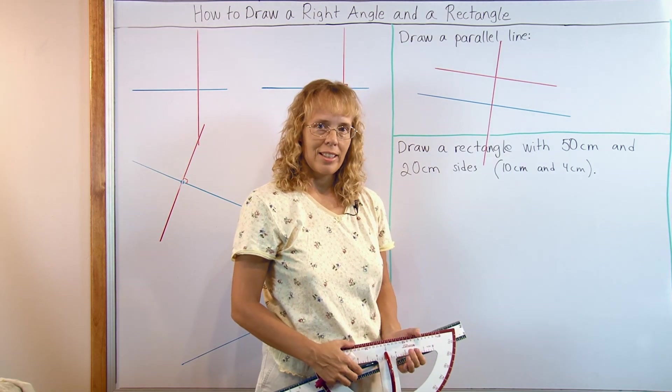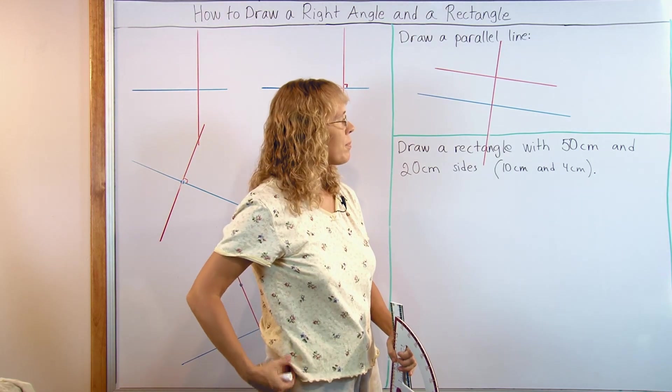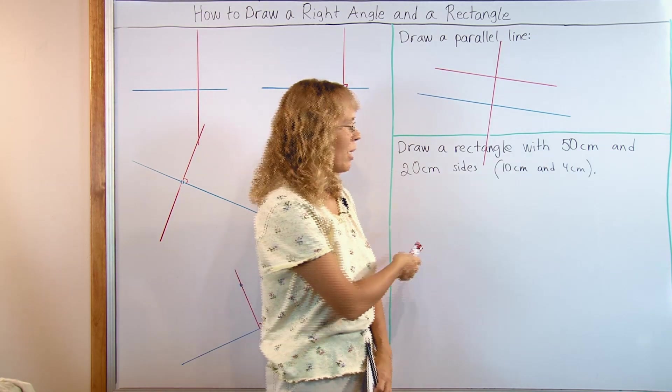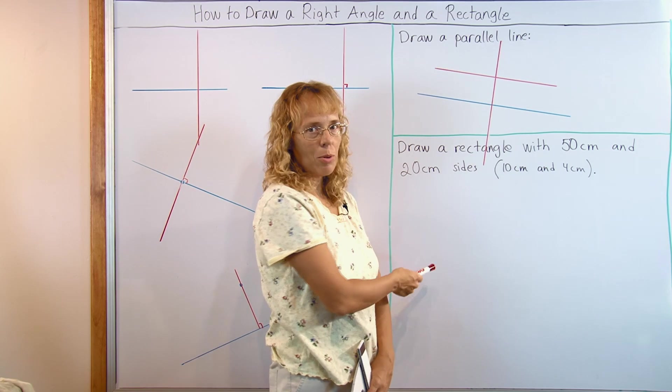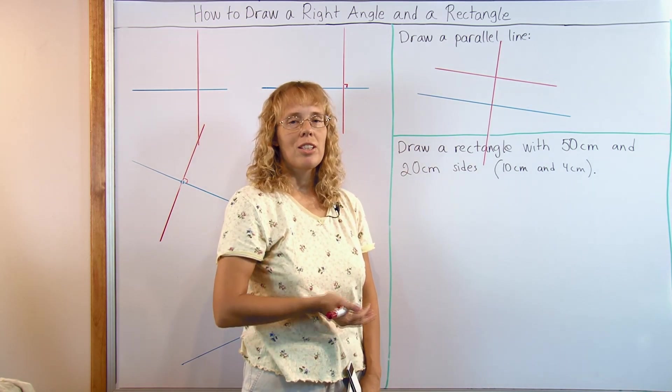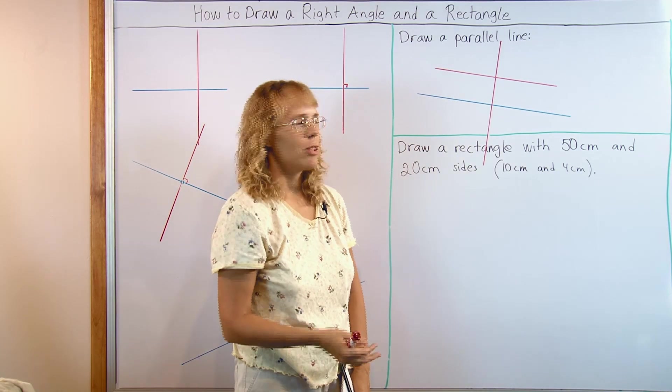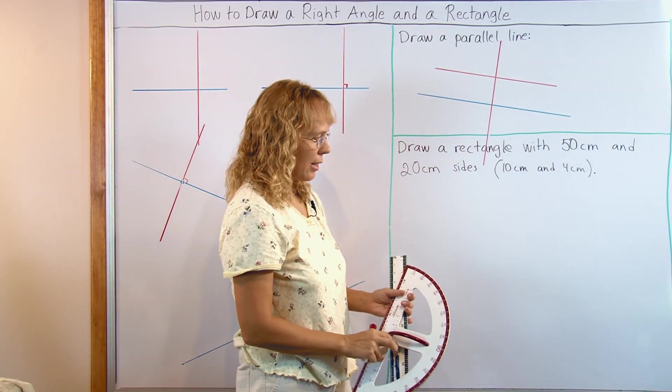Lastly we're going to draw a rectangle. I wrote here 50 centimeters and 20 centimeters because that's how big I have to draw it so that it won't be just a tiny one here on the board. But for students who are drawing it on paper they need to use smaller numbers because 50 centimeters would exceed paper size, so maybe 10 and 4 centimeters or something like that.